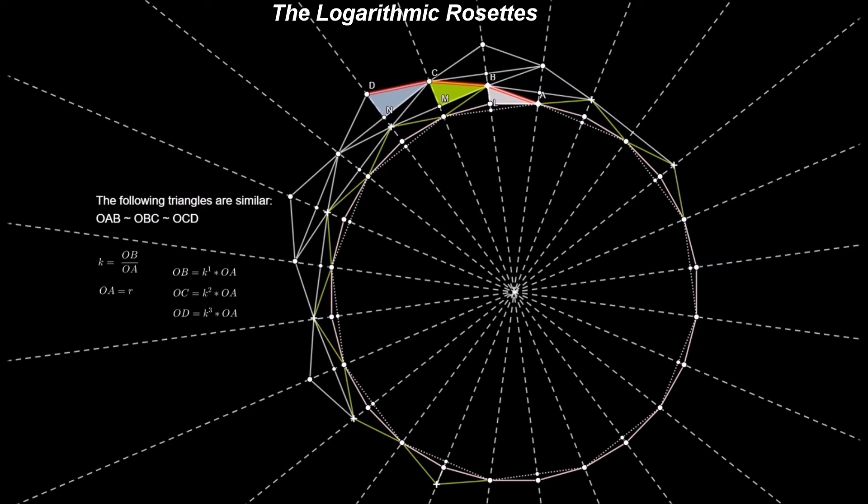The logarithmic rosette is constructed from tiles shaped as similar triangles. The following triangles are similar triangles: ALB, BMC, and CND.